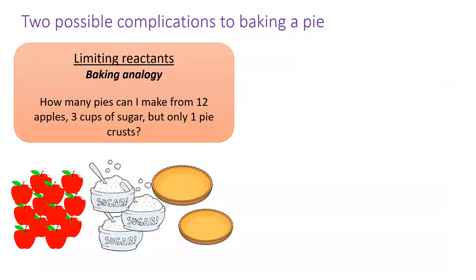Suppose you are baking some pies with a limited number of ingredients. You might ask, how many pies can I make with the ingredients that I have? One of the ingredients will be used up first, that one will be limiting. This ingredient will dictate how many total pies you can bake.